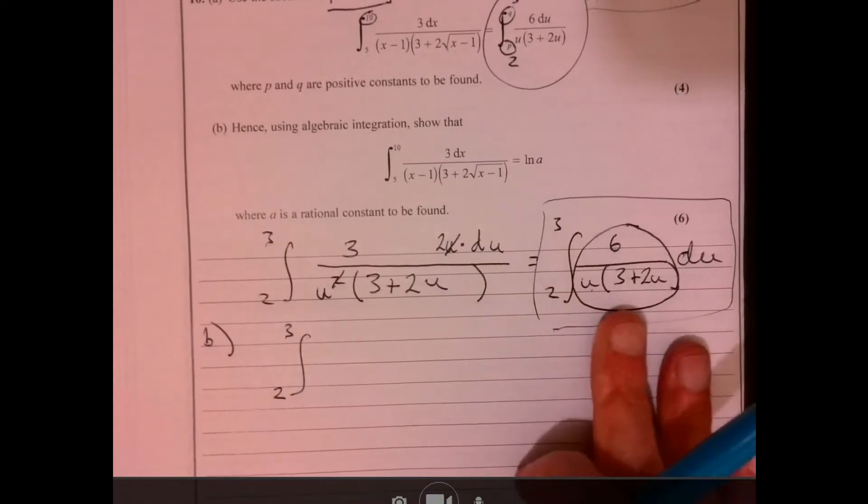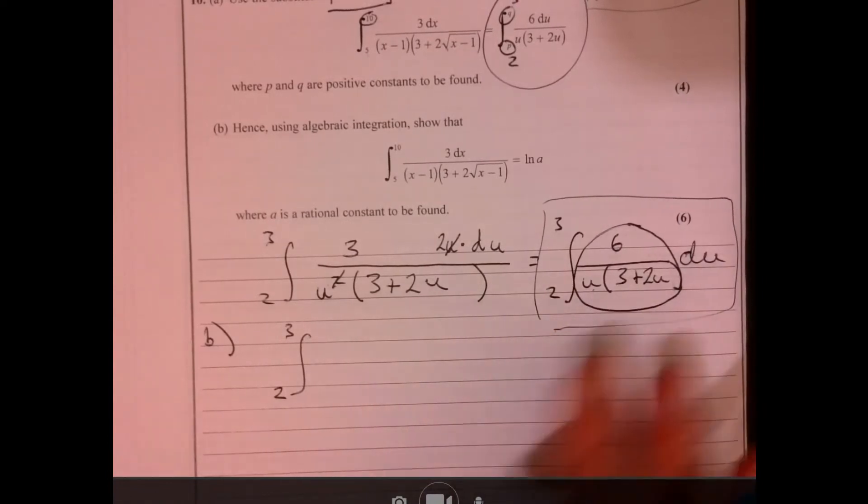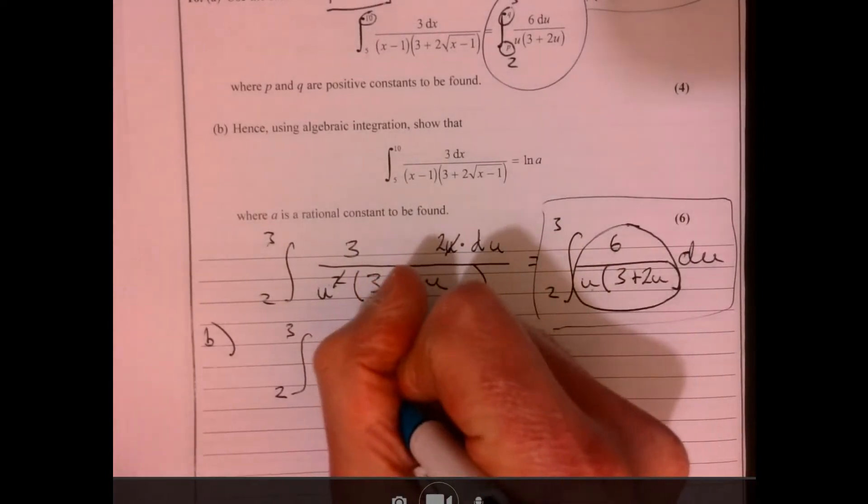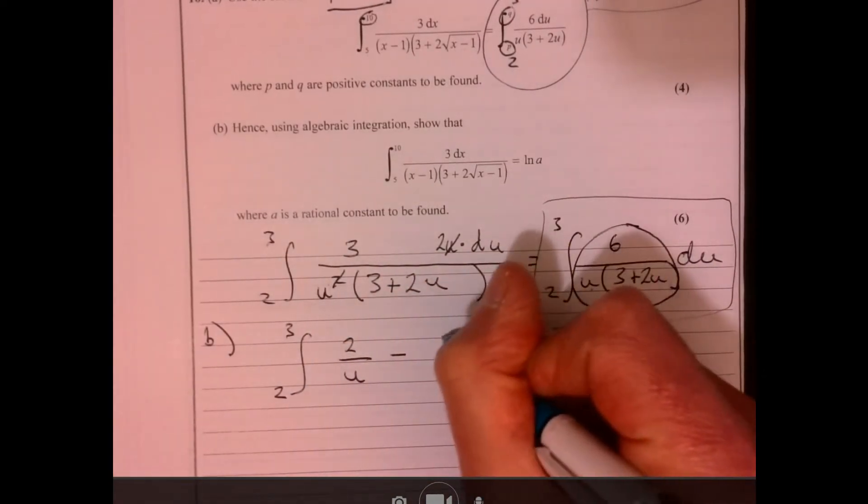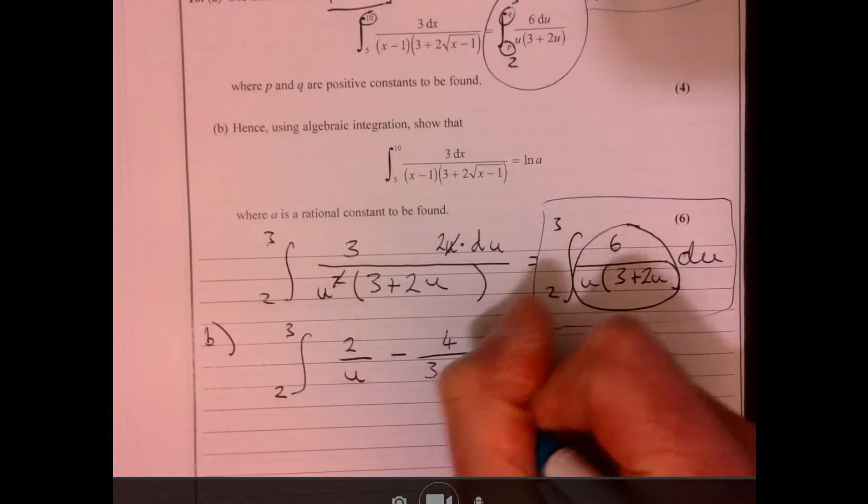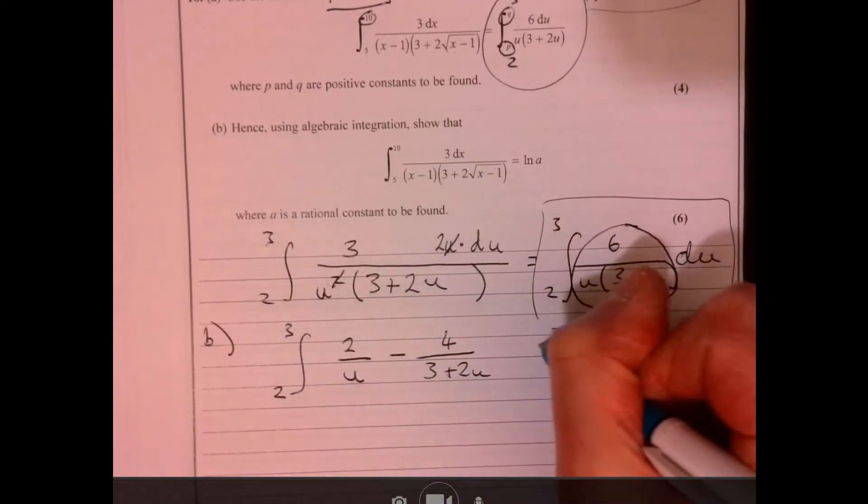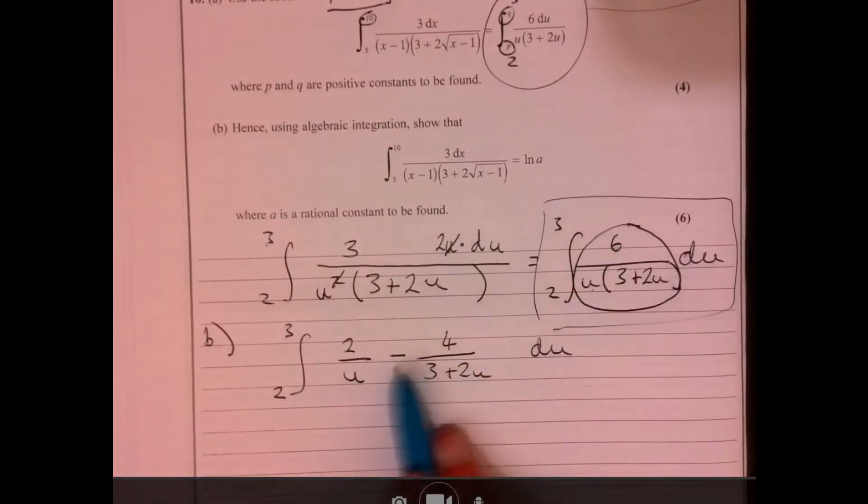So if you use partial fractions, I'm going to jump a little step here, because you might be okay with partial fractions. But I'm just going to give you this part of the answer. So four over three plus two u, du.